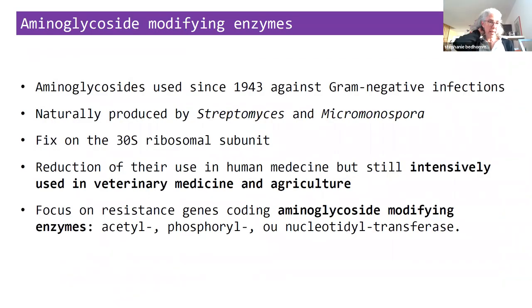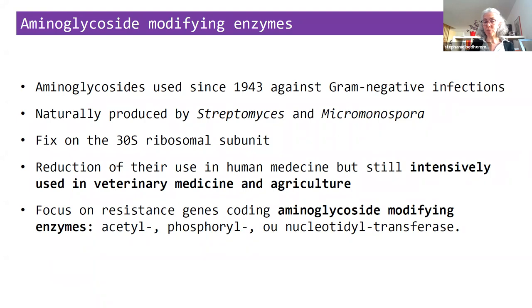We decided to focus on aminoglycoside modifying enzymes. Aminoglycosides are antibiotics that have been used since the 1940s to treat gram-negative infections. They are naturally produced by Streptomyces and Micromonospora, and they act by fixing on the 30S ribosomal subunit. In the last decade there has been a reduction of use in human medicine, but they are still intensively used in veterinary medicine and in agriculture. As for many other antibiotics, there are diverse resistance mechanisms, but here we focus on resistance genes that code for enzymes that modify the aminoglycosides by transferring either an acetyl, a phosphoryl, or a nucleotidyl group.